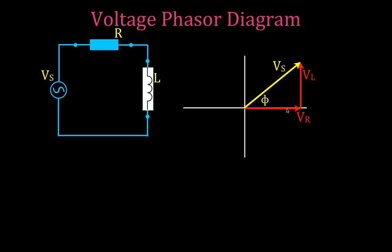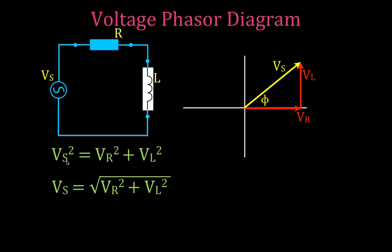For resistors, the current and the voltage are in phase. For inductors, they're out of phase by 90 degrees. Therefore, if we have an RL circuit with both elements, the angle that the voltage leads the current is going to be somewhere between 0 and 90 degrees. Using the Pythagorean theorem: Vs squared equals VR squared plus VL squared. Taking the square root of both sides gives us Vs, the voltage of the source, equals the square root of the voltage across the resistor squared plus the voltage across the inductor squared.